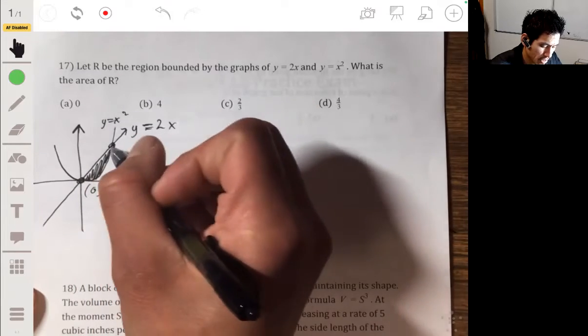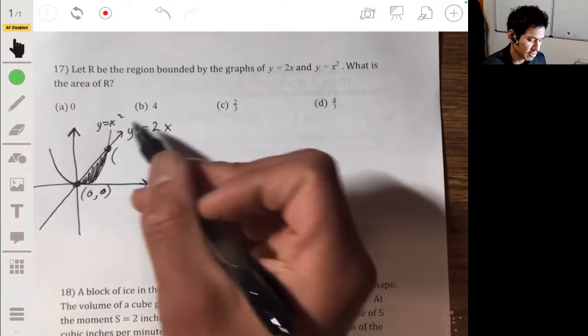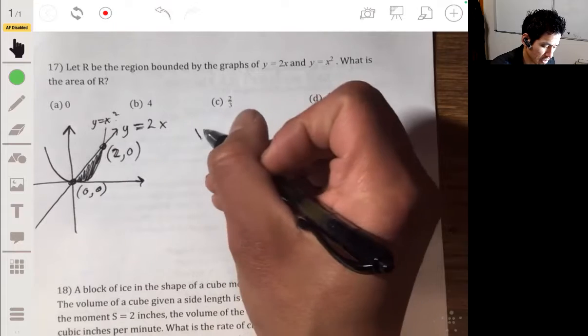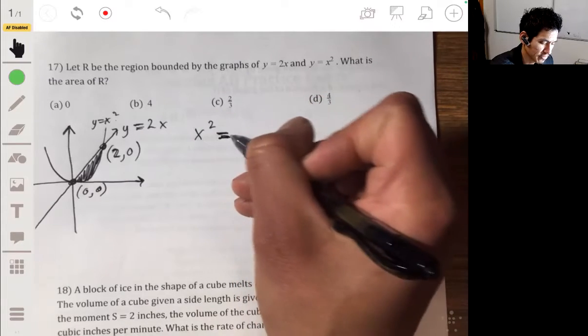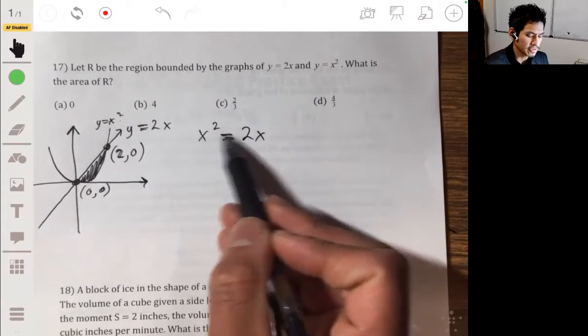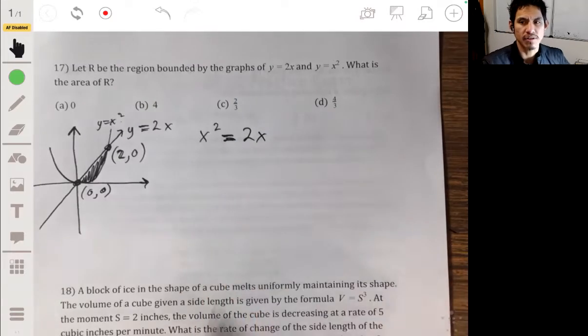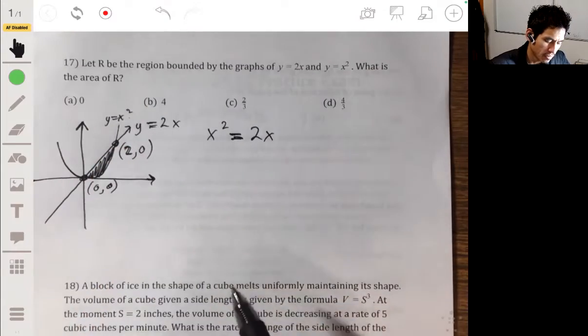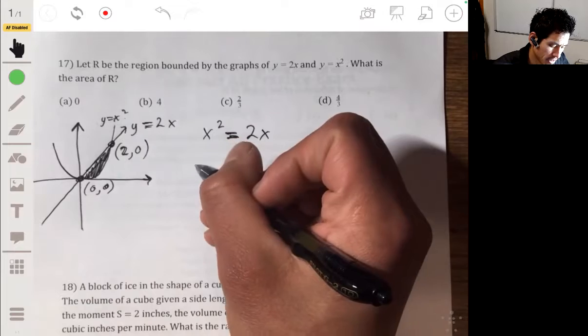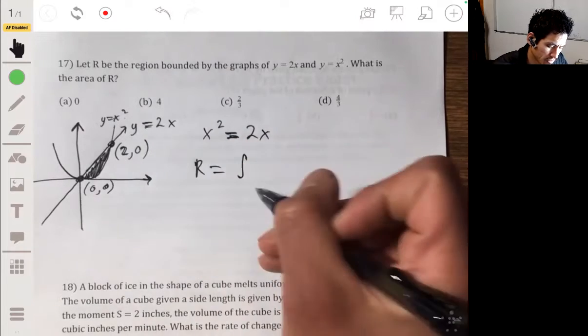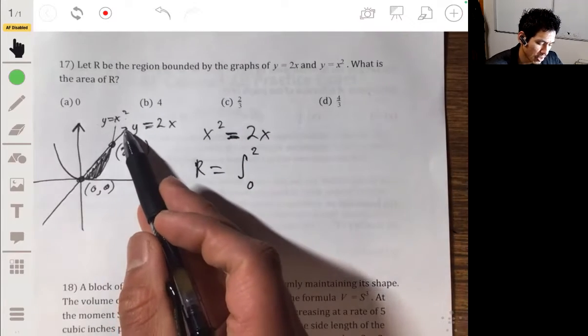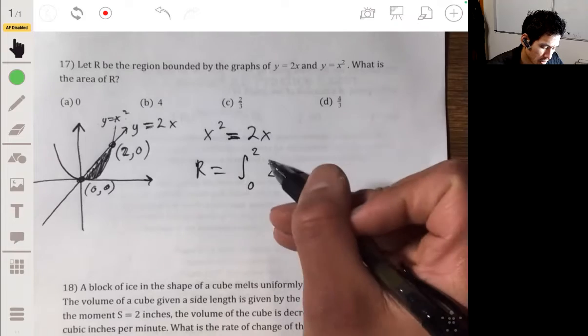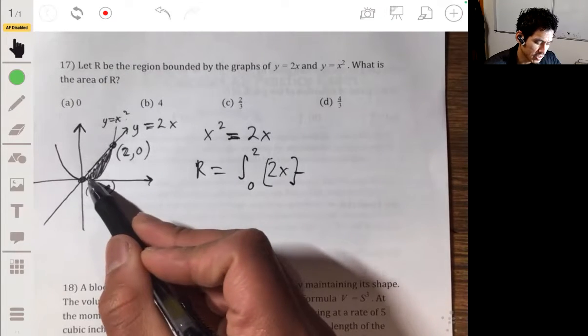We know they intersect at 0 here, and over here it's going to be at looks like 2,0. You can always just set them equal if you're uncertain, and then just solve for x. They're never going to make it a hard, complicated value to find. This is not what they're testing. What they're testing now is that you recognize that R will be equal to the integral from 0 to 2, where you have the top function, which is 2x minus the parabola function, or the x squared.